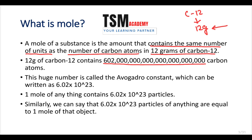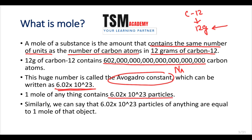This huge number is called Avogadro's constant. We also call it Avogadro's number and it is denoted by Na. It can be written as 6.02 × 10²³. It means that one mole of anything — any atom, molecule, or compound — contains 6.02 × 10²³ particles. We can say 6.02 × 10²³ particles of anything are equal to one mole of that substance. If there is one mole of anything, then it will be one mole.